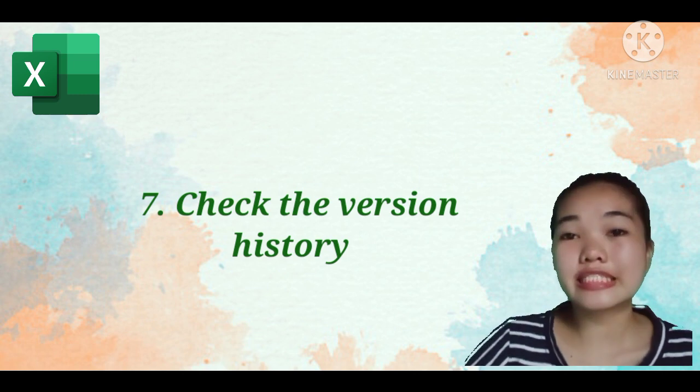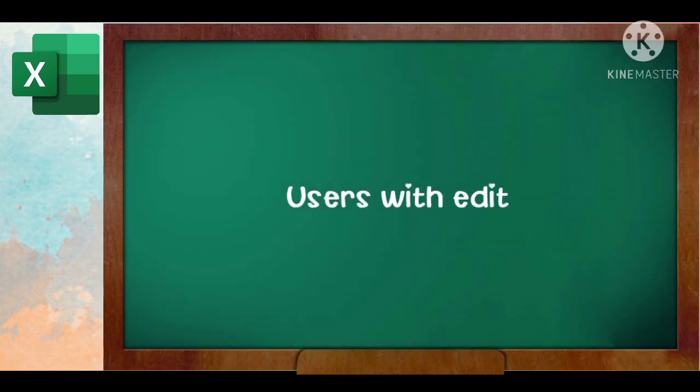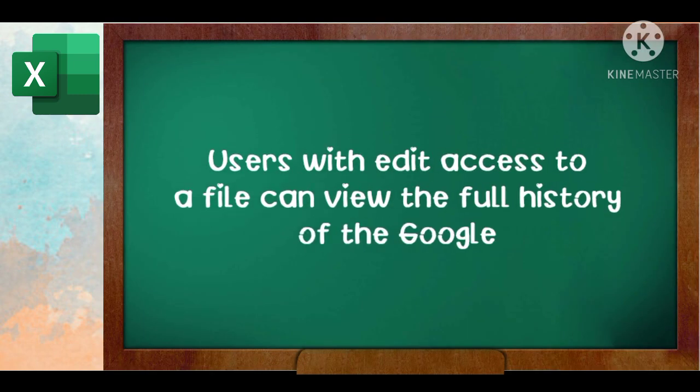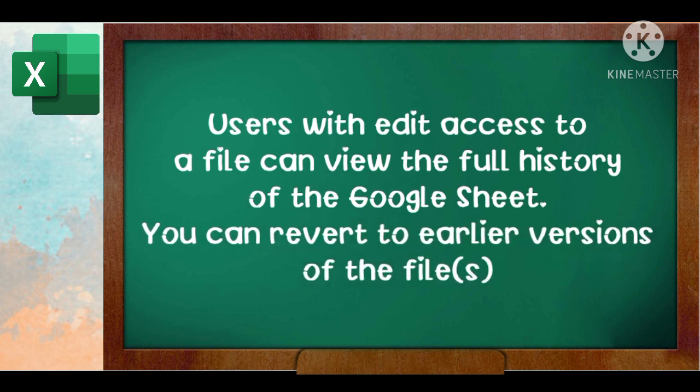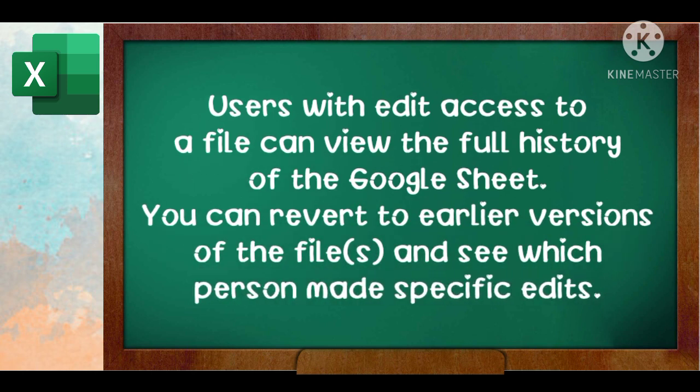Number seven, check the version history. Users with edit access to a file can view a full history of a Google Sheet. You can revert to an early version of the file and see which person made specific edits.